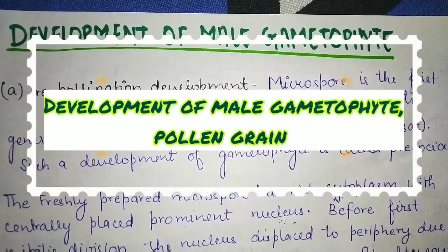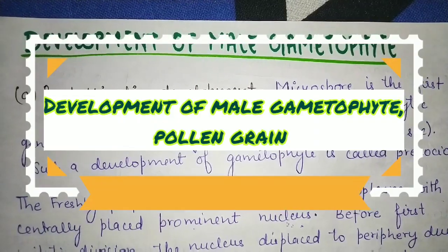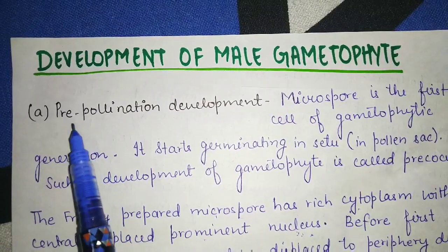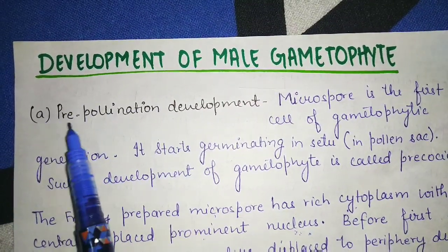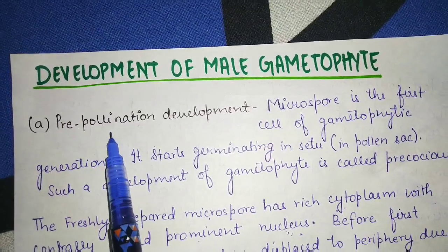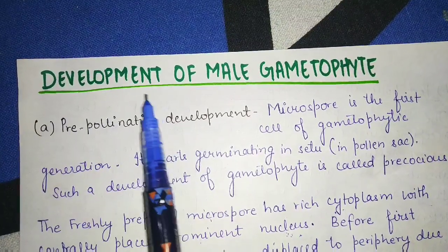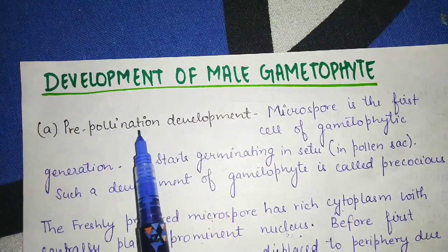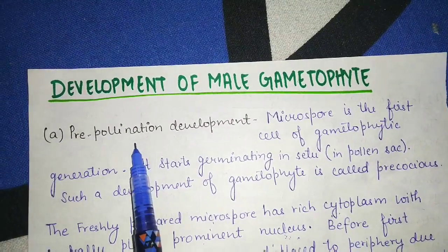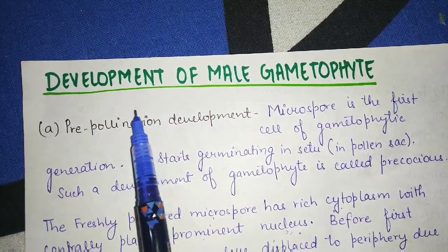In this video we are going to study the development of male gametophyte, known as pollen grain. It is divided into two types: pre-pollination development and post-pollination development. Pre-pollination is before the pollination process and post-pollination is after it. Pollination is the transfer of the pollen grain from the anther to the receptive stigma.